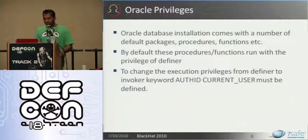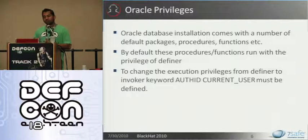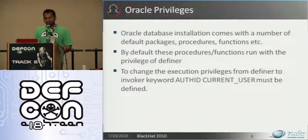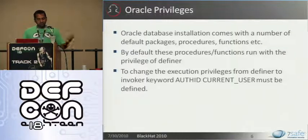For those who are not aware of Oracle database: when you install it, it comes with a number of default packages. These default packages have considerably reduced in 11G compared to 8i, but there are still quite a few. These packages have a number of procedures and functions, and by default these run with the privileges of the Definer. An easy way to understand this is to compare it with SUID files in Linux. Similarly, you have these procedures and functions by default running with Definer privileges. To change execution from Definer to Invoker, you must declare the keyword AuthID current_user in the declaration of that procedure or function.